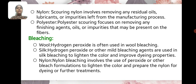Bleaching — Wool: Hydrogen peroxide is often used in wool bleaching. Silk: Hydrogen peroxide or other mild bleaching agents are used in silk bleaching to lighten the color and improve dyeing properties.